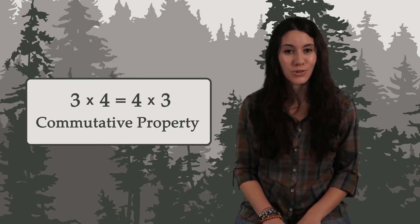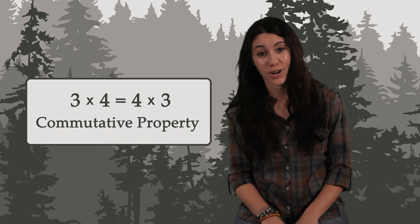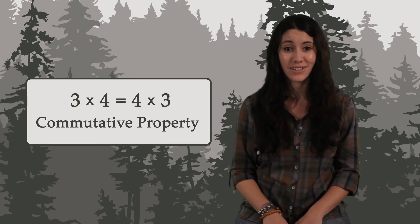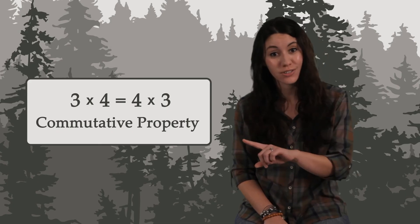The word commutative is similar to the word commute. A commute is driving to work in one direction and then driving back home in the other direction. And the commutative property says you can multiply in one direction or the other.